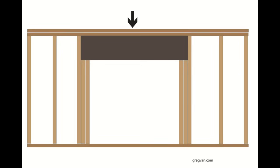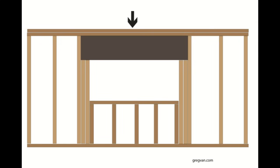You are going to run into situations where an architect or an engineer requires a specific size header — a little larger — and it will require double trimmers or even four-by-fours or four-by-sixes in some cases to support heavy loads.